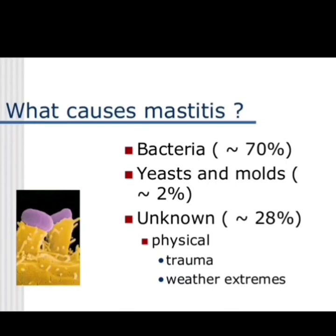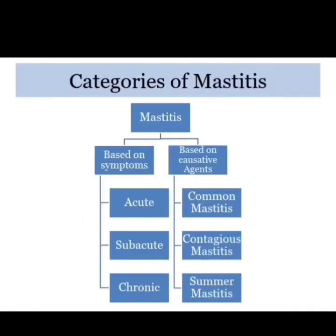Mastitis can also be caused physically by trauma or weather extremes. Mastitis is categorized either on the basis of symptoms or on the basis of causative agents. On the basis of symptoms, mastitis is classified as acute, sub-acute, and chronic. On the basis of causative agents, it is classified as common mastitis, contagious mastitis, and summer mastitis.